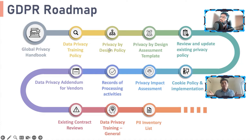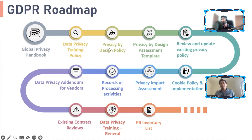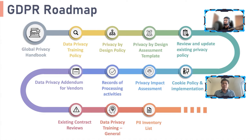Out of 100 attributes, 10 might be sensitive data. Out of 200 processes, 20 might use sensitive personal data. When doing a privacy impact assessment, I'll prioritize those 20 higher-risk processes first. The PII inventory list is not a separate activity — you can maintain it side by side while doing your records of processing activity.